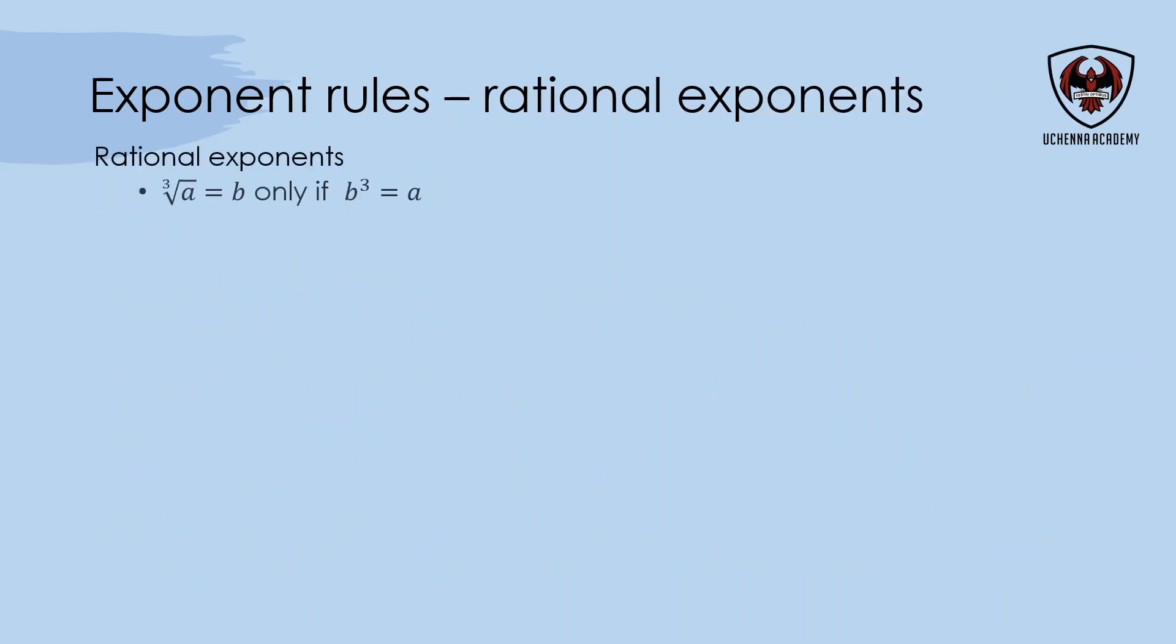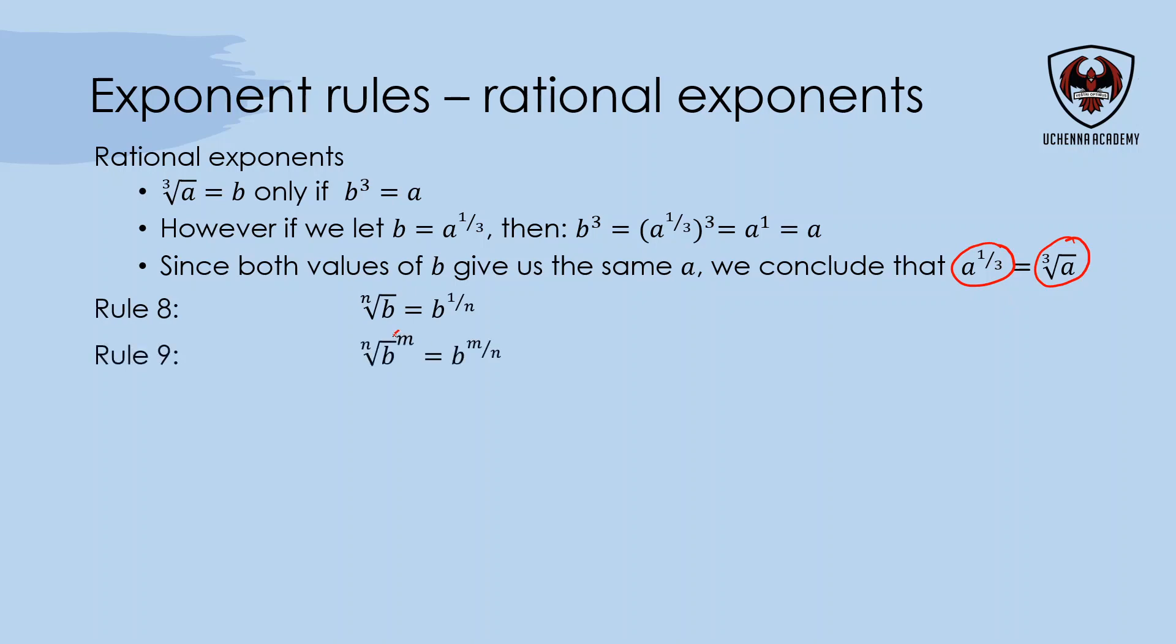Exponent rules for rational exponents: if I have nth root, we can make that into a base with an exponent by saying the exponent becomes 1 over n, whatever that nth root is. That rule can be extended by adding an exponent to a radical—that exponent takes place of the 1. So instead of 1 over n, it becomes m over n. For example, cubic root of x squared can be written as x to the exponent 2 over 3.